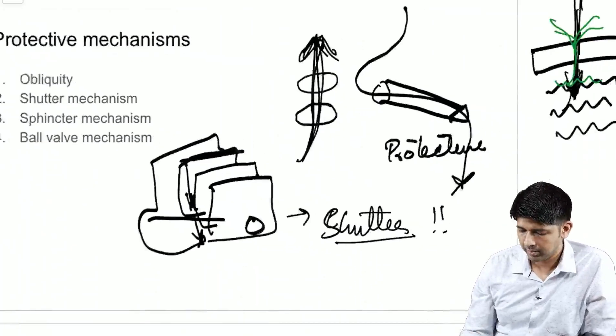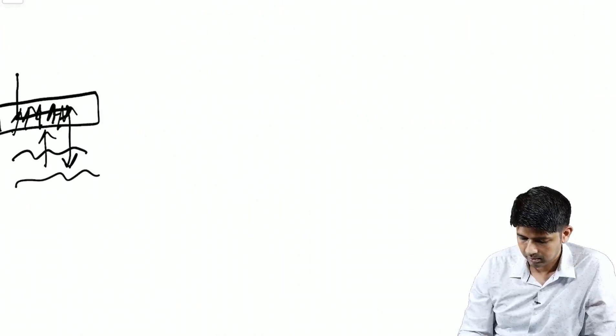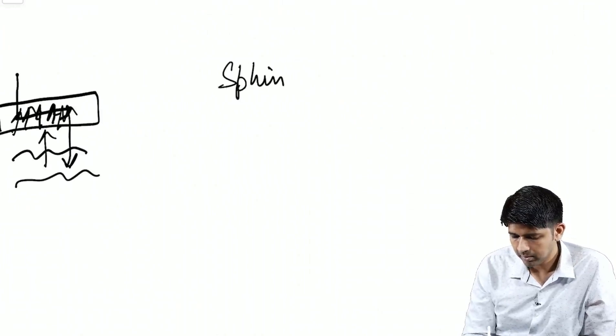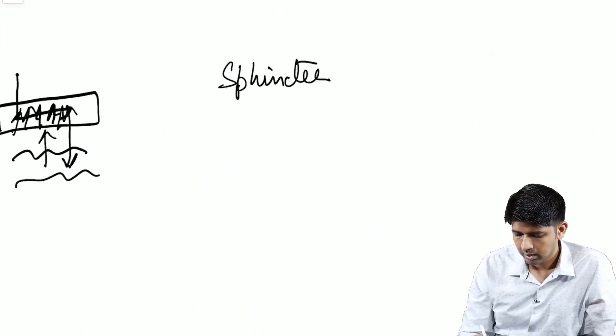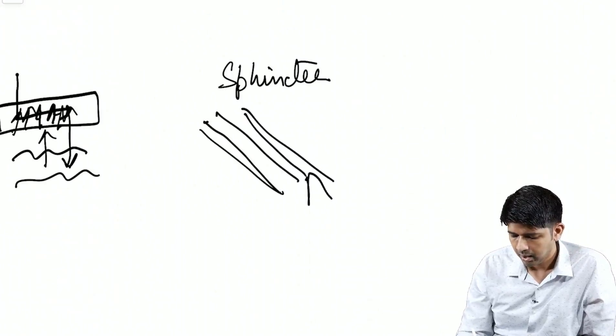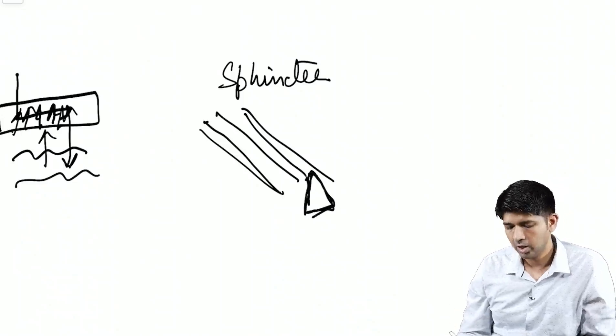Next is the sphincter mechanism. For the sphincter mechanism, we know that the external oblique fibers are placed like this and the opening in the external oblique is a triangle.